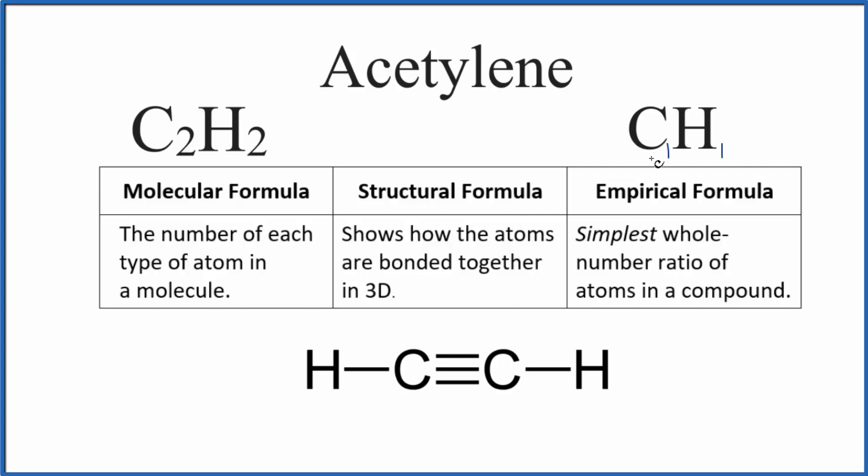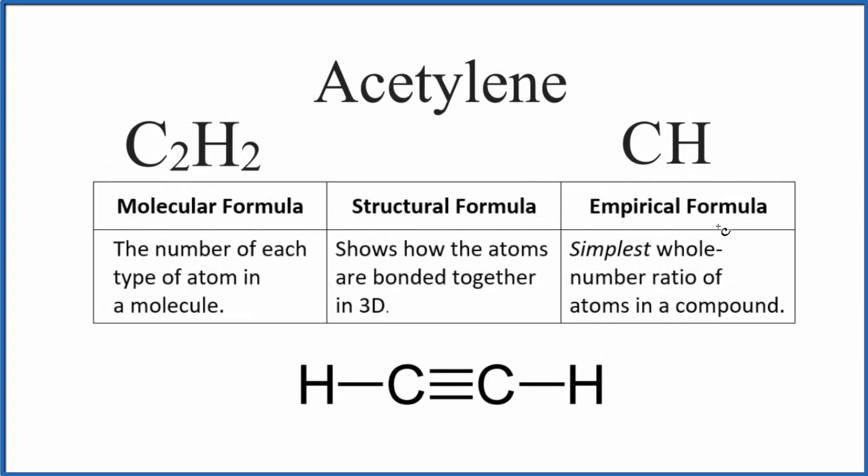We usually don't write the ones though. So the empirical formula is just telling us the ratio of carbon to hydrogen atoms, a 1 to 1 ratio. This is Dr. B with the molecular formula, structural formula, and the empirical formula for acetylene. Thanks for watching.